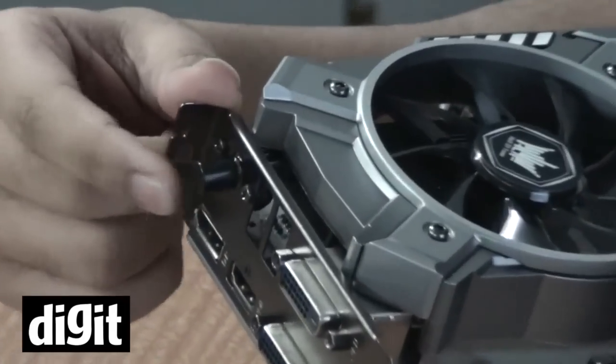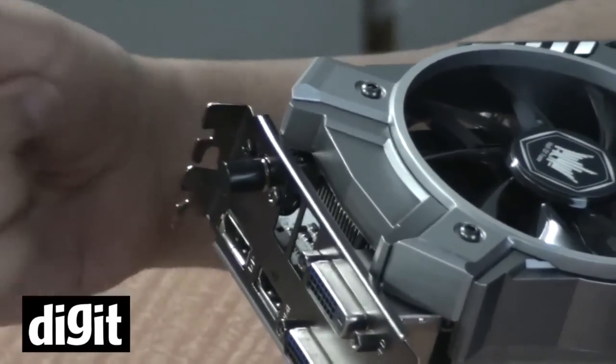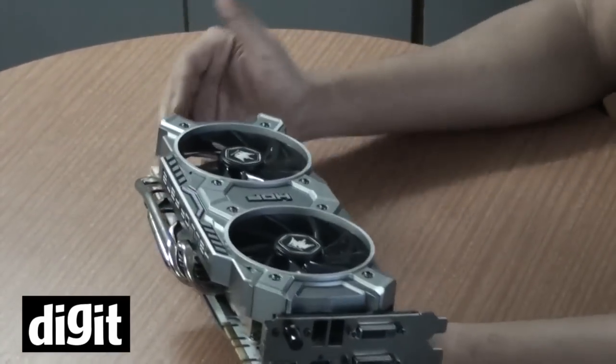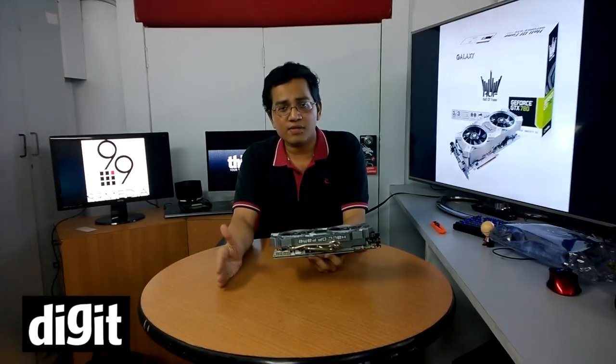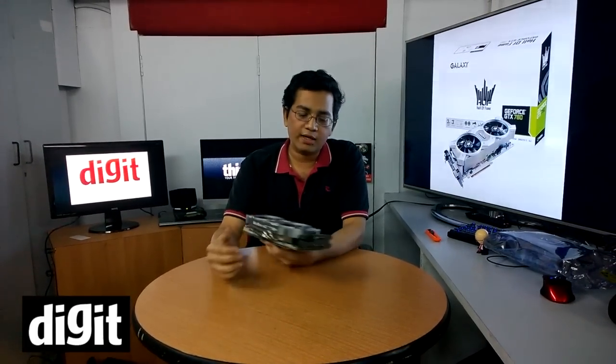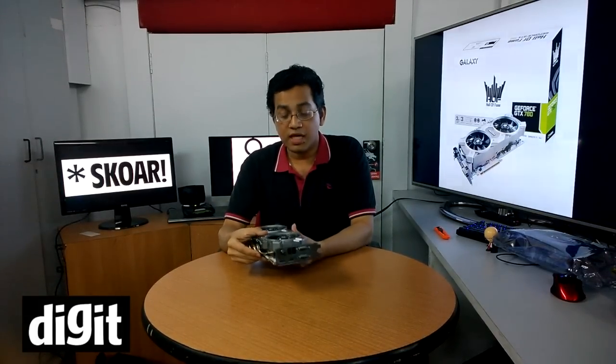It's an on-the-fly overclocking button that's supposed to push an extra 8% over the turbo boost. So you have the normal frequency at 1058, then you have turbo boost, and when you press this button it goes even further for even better performance.